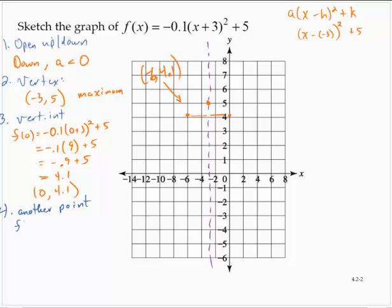So what if I have found f(6)? f(6) would be -0.1(6 + 3)² + 5. Negative 0.1, 6 plus 3 is 9.